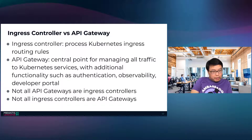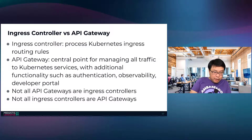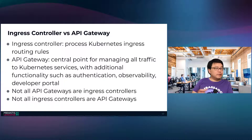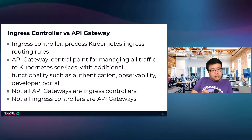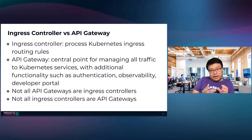What's the difference between an ingress controller and an API gateway? To recap: an ingress controller processes Kubernetes ingress routing rules, while an API gateway is a central point for managing all traffic to Kubernetes services, typically with additional functionality such as authentication, observability, a developer portal, and so forth. Not all API gateways are ingress controllers because some don't support Kubernetes at all. And not all ingress controllers support the functionality you'd typically associate with an API gateway. Generally speaking, API gateways that run on Kubernetes should be considered a superset of an ingress controller, but if the API gateway doesn't run on Kubernetes, then it's an API gateway and not an ingress controller.